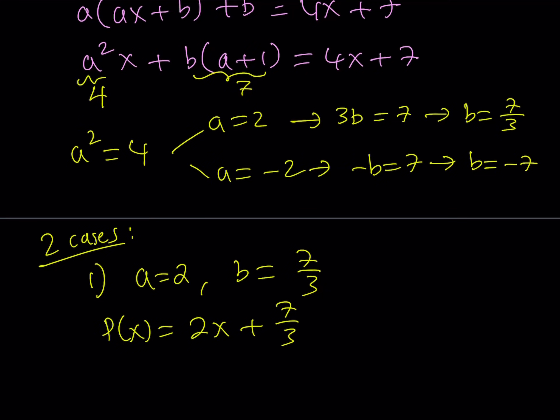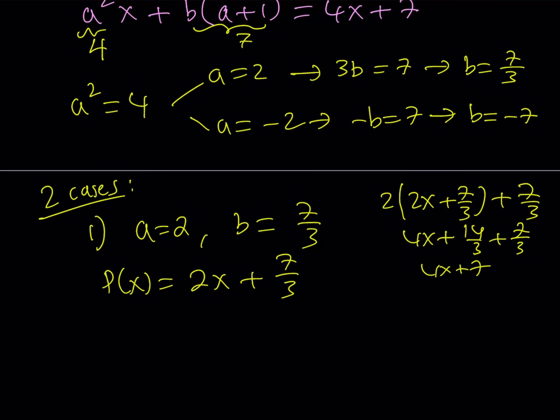Now you can obviously test this, like plug it in. For example, if I had to do the composition of this with itself, you'll notice that it works. You get 4X plus 14 thirds plus 7 thirds, which is 21 thirds, and that is equal to 7. And obviously the other one is going to work as well. So you can test it, you don't have to, but it just shows you that you got it right.